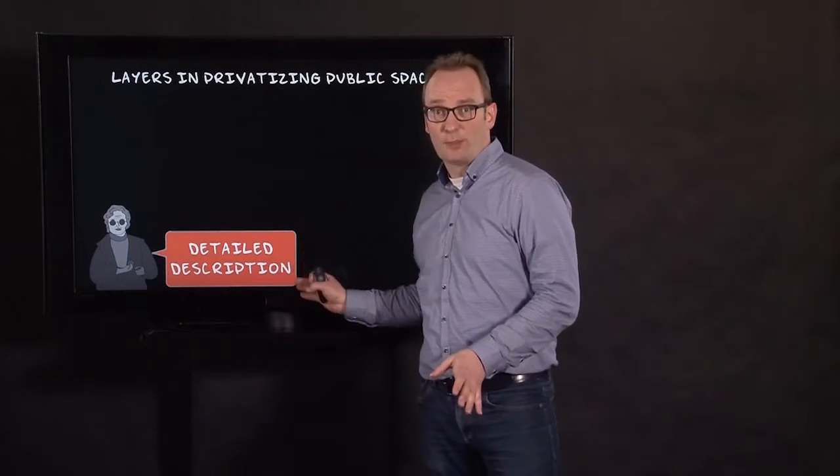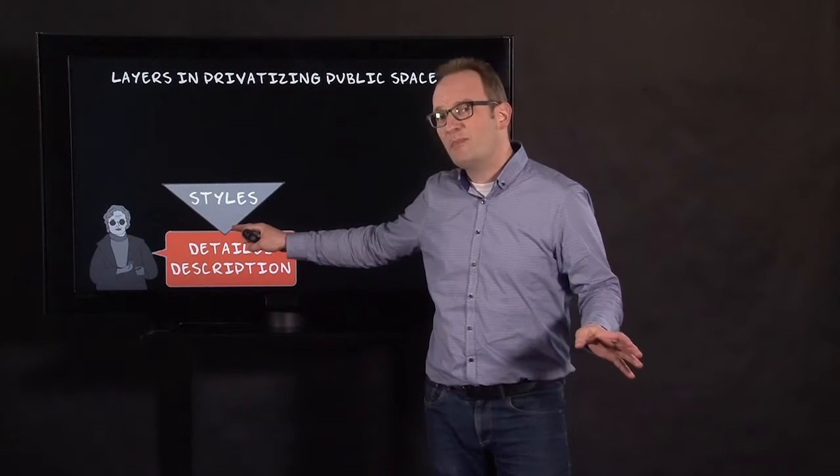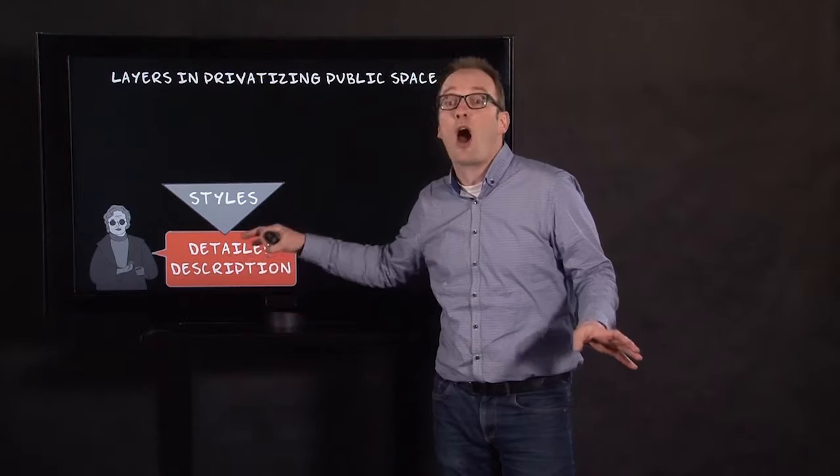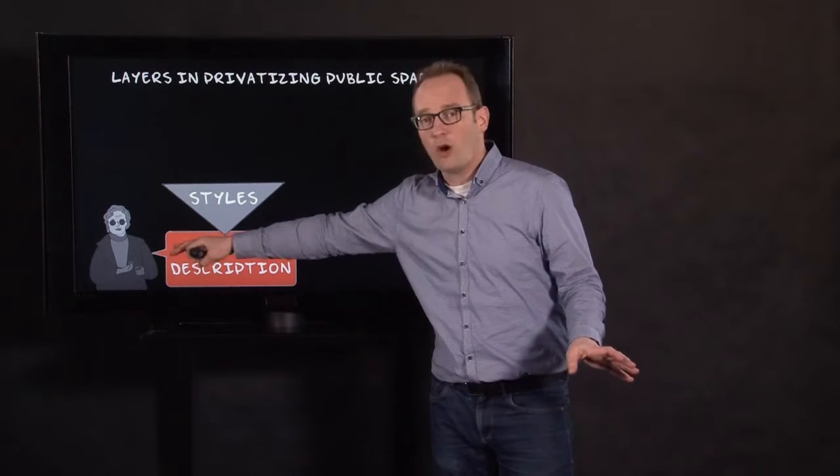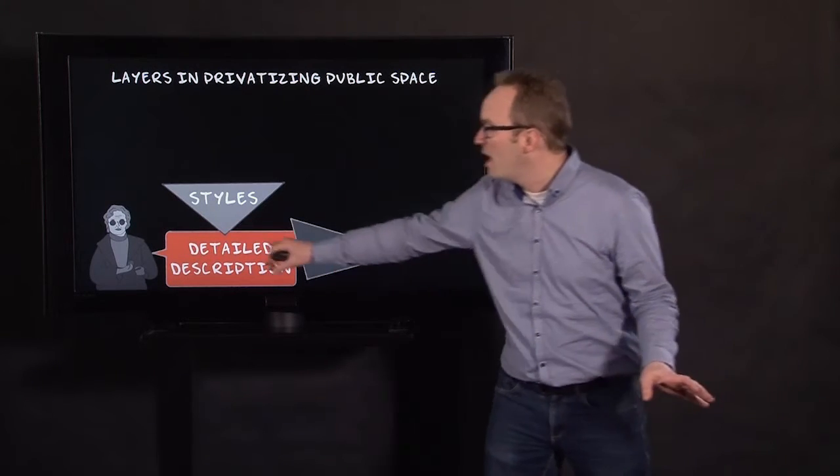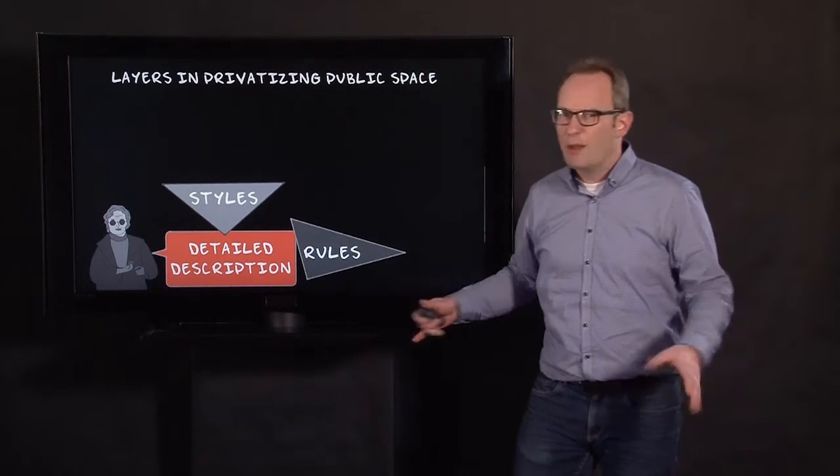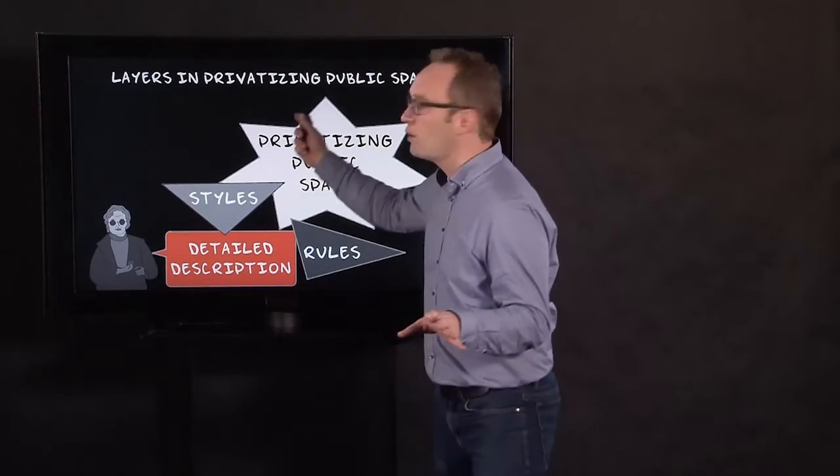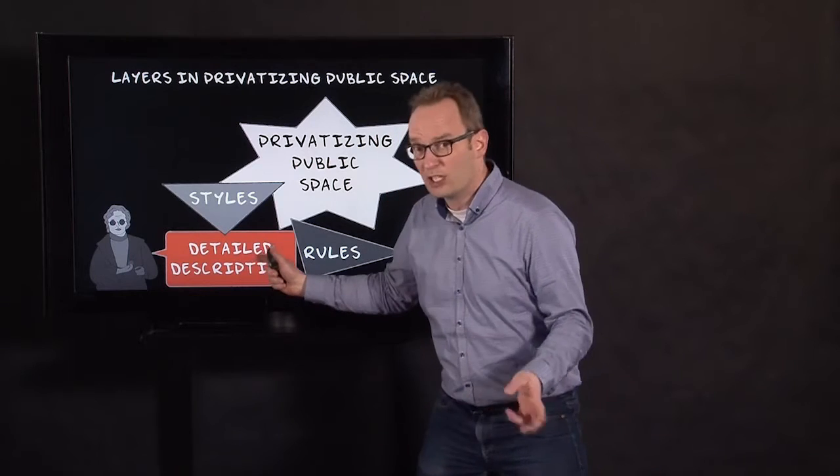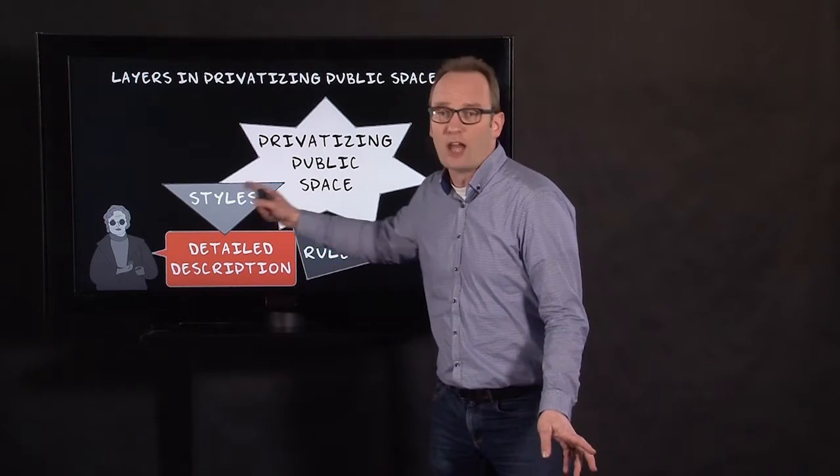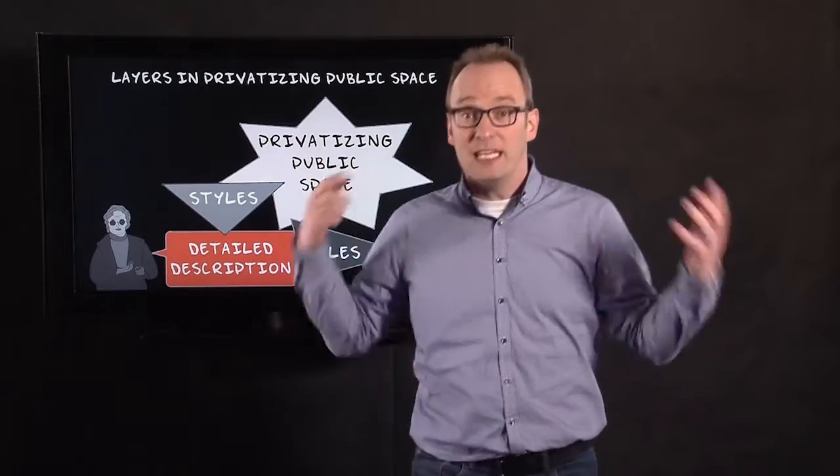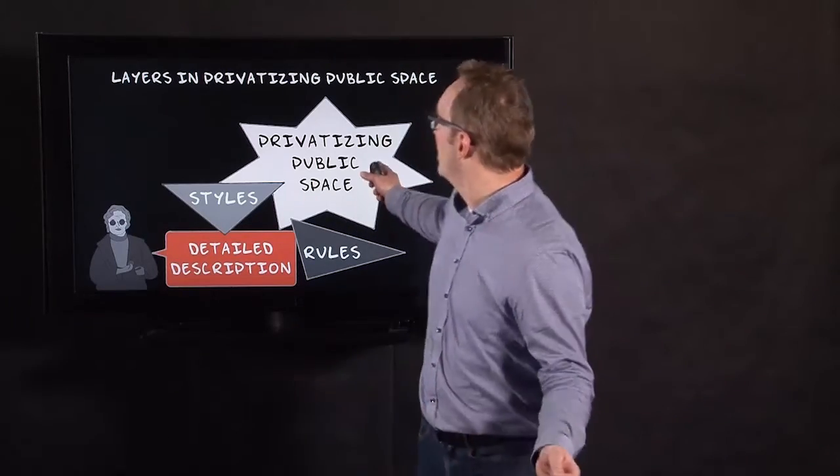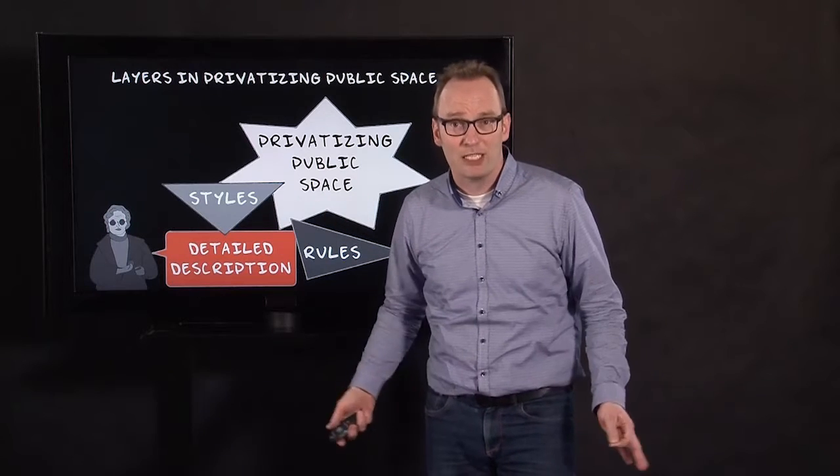You can also see this thick description going on in Lyn Lofland's work on privatizing public space. We saw the very detailed description—these thick descriptions are really important for Lofland. But she uses these descriptions in order to create styles as well as rules. It's not about the styles and rules in her work; it is in the end about what people do with it. So these detailed descriptions help to create the typologies but ultimately help us understand what is going on in public space and how we try to privatize it.